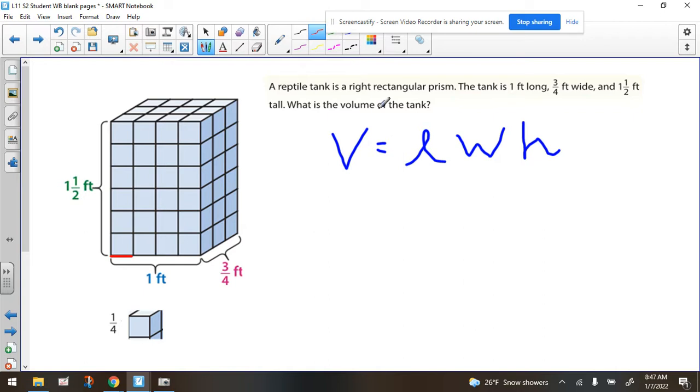It says a reptile tank is a right rectangular prism. The tank is one foot long, three-fourths feet wide, and one and a half feet tall. What is the volume of the tank? And if they show you this image, then what you're supposed to understand here is if you look here, this says one feet, but that doesn't mean this cube is a cubic foot. That just means that this cube right here is a quarter-foot cube. You would need four of these. This is the quarter-inch cube. You would need four of these to go across to make one foot.